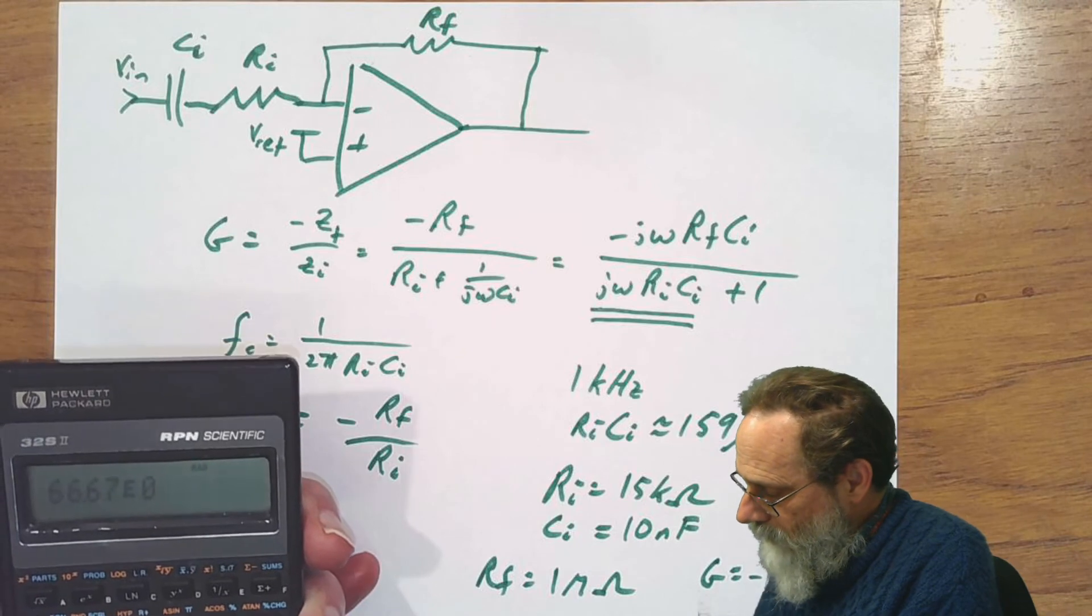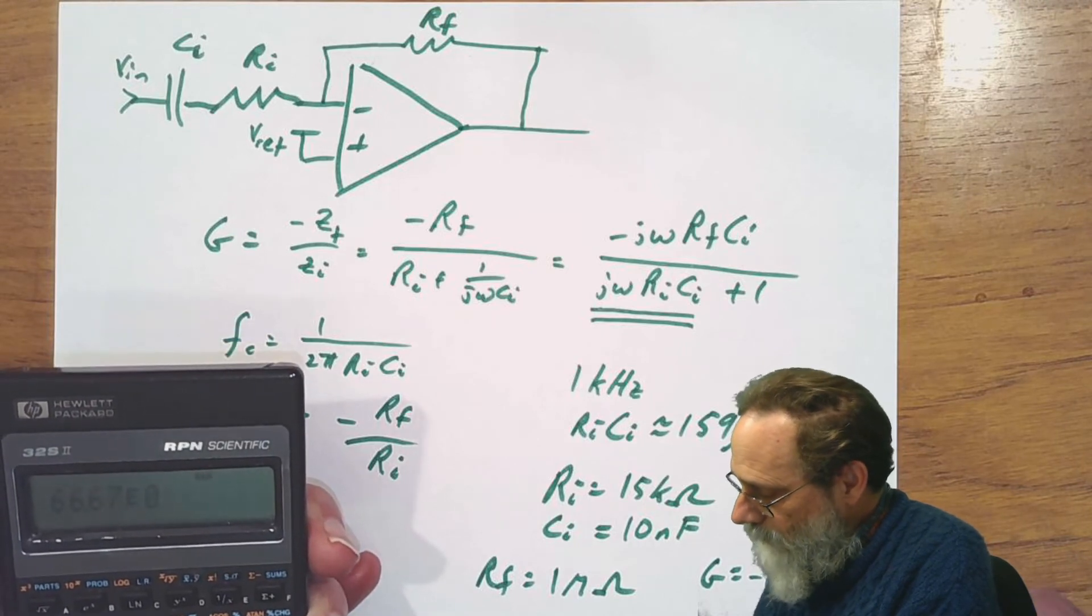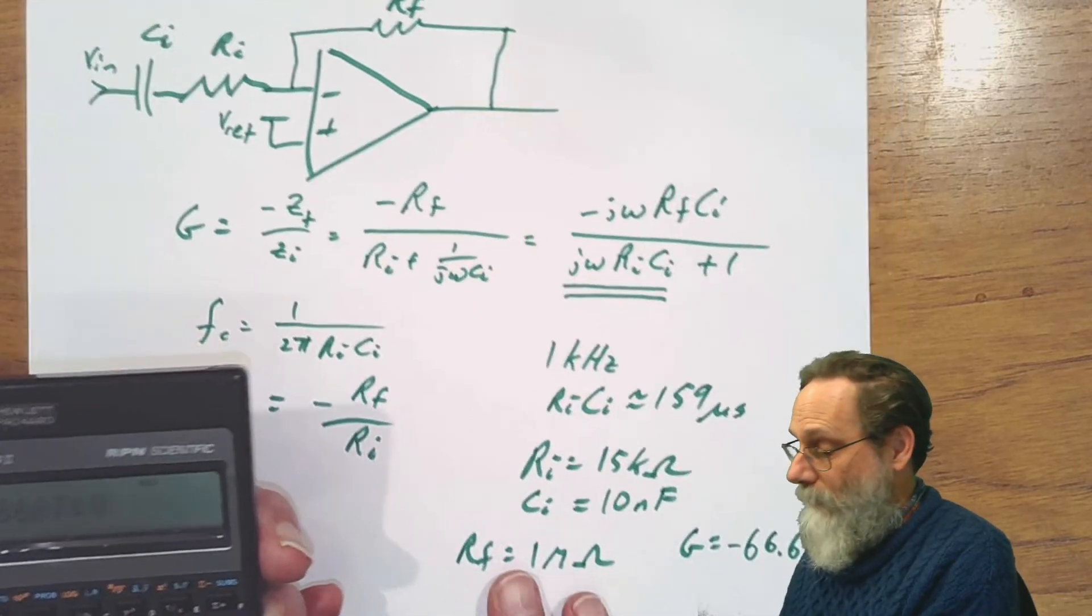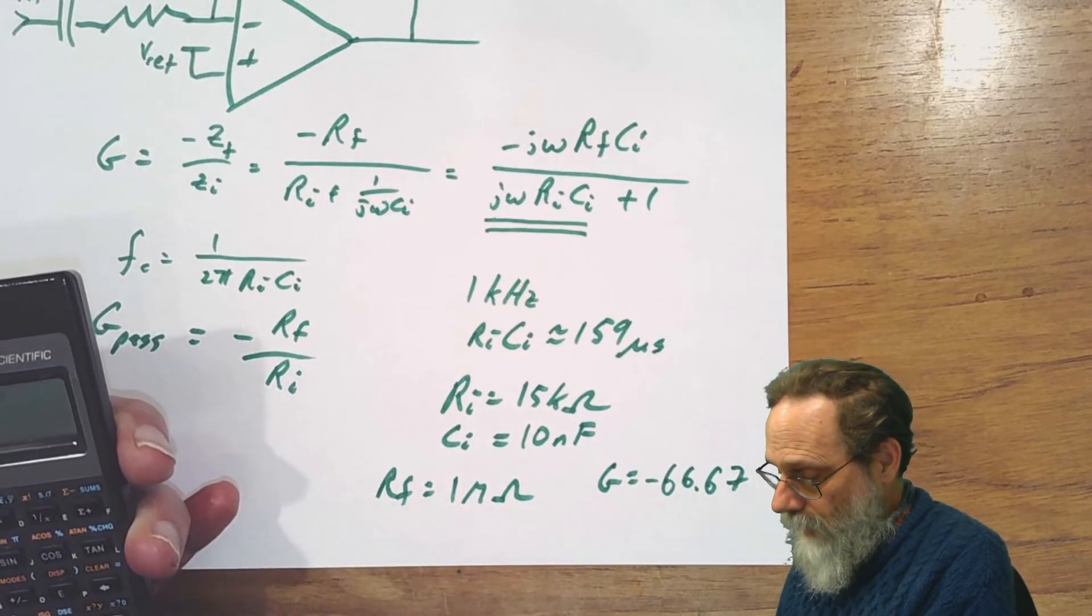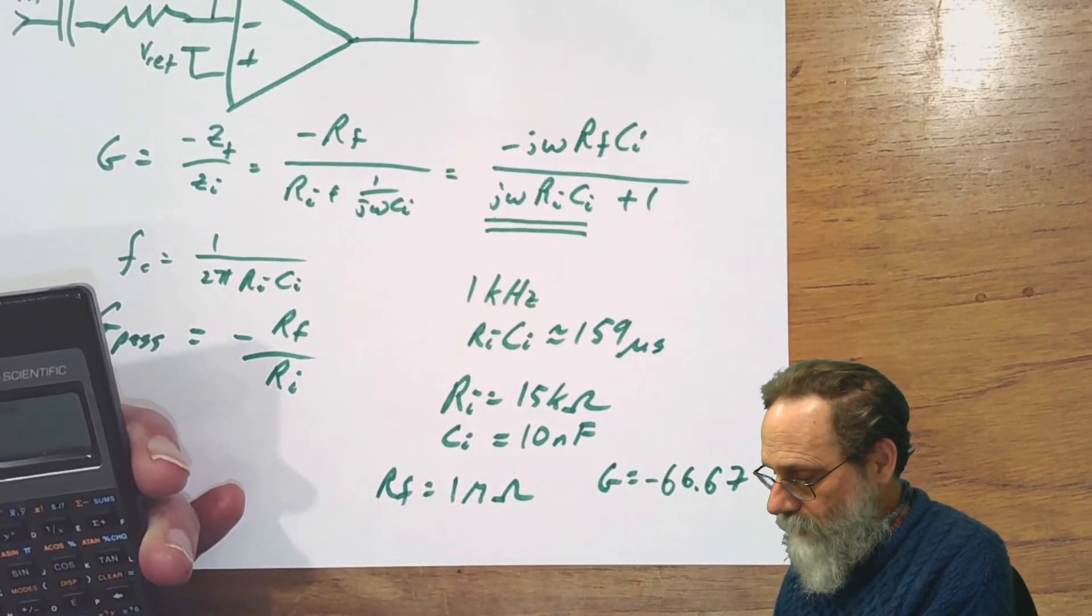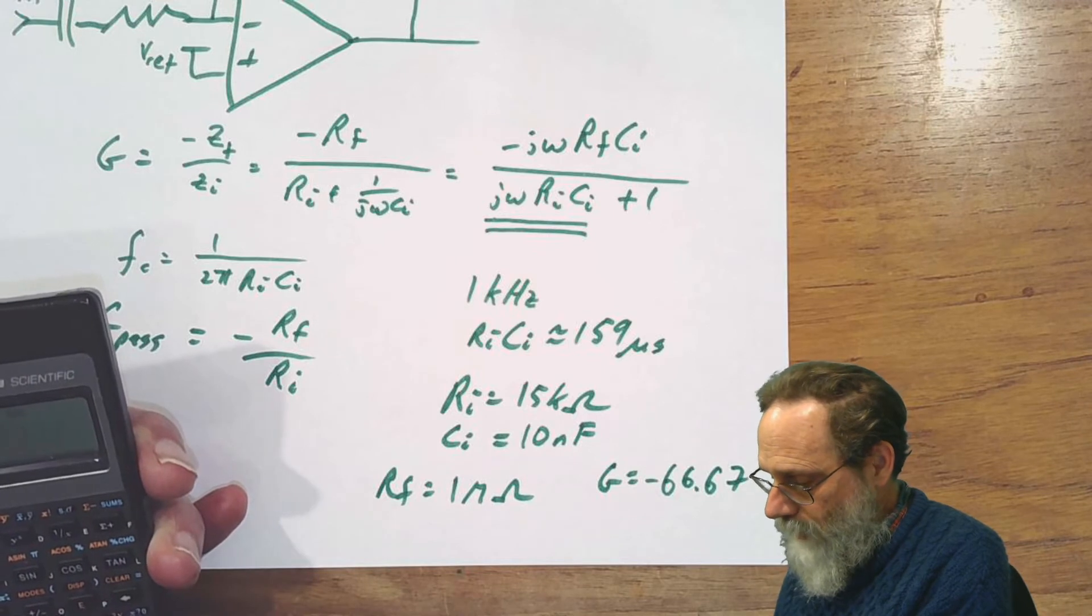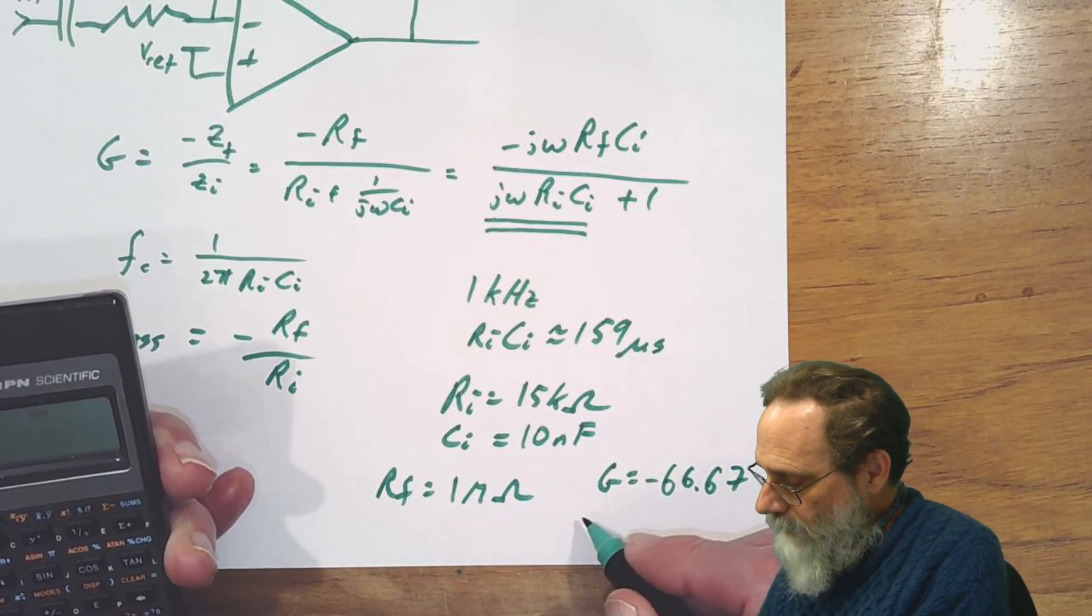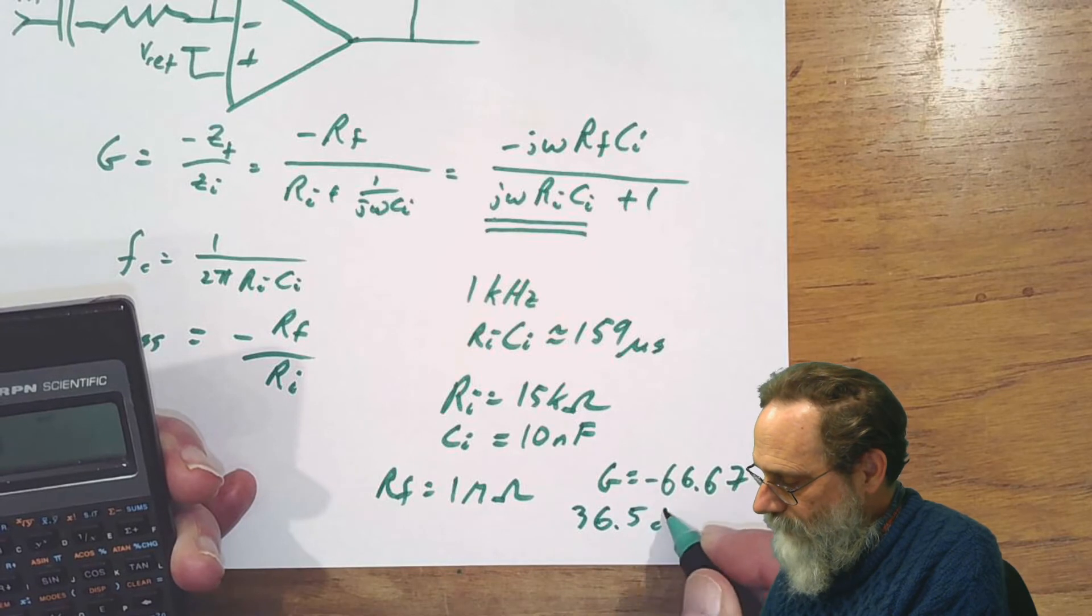1 megaohm over 15 kiloohms is going to be about minus 66.67. Or if you prefer that in decibels, take the log base 10 and multiply by 20. That's about 36.5 dB.